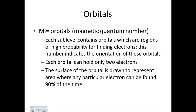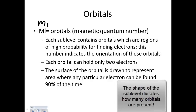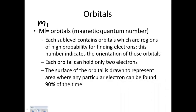The third quantum number is the magnetic quantum number, ML — written as M with a subscripted L. Each sublevel contains orbitals, which are regions with high probability for finding electrons. This quantum number is primarily concerned with shape, and each orbital can only hold two electrons. We're predicting an area where an electron might be found about 90% of the time.